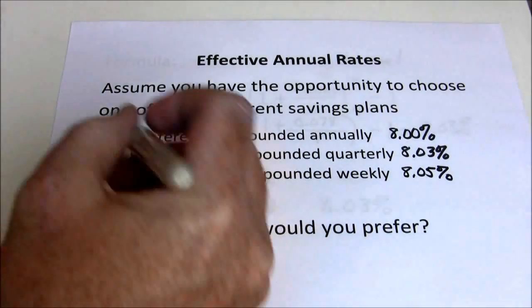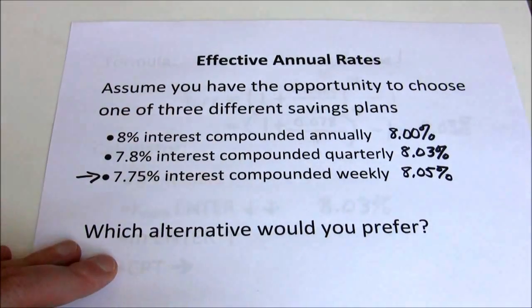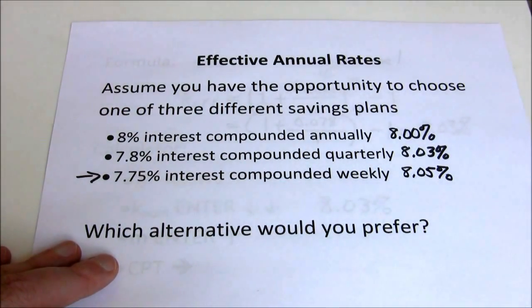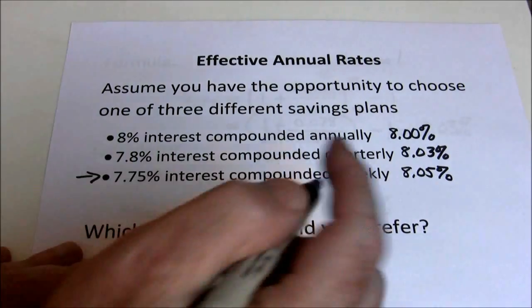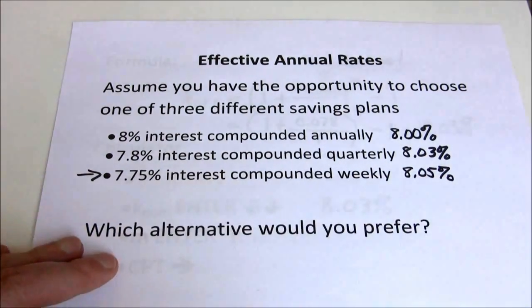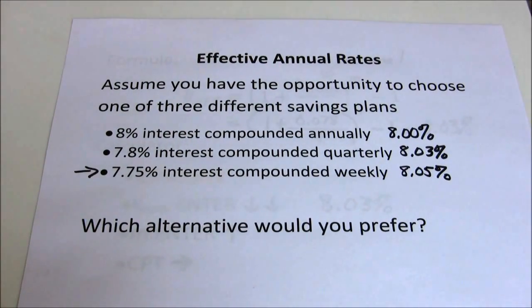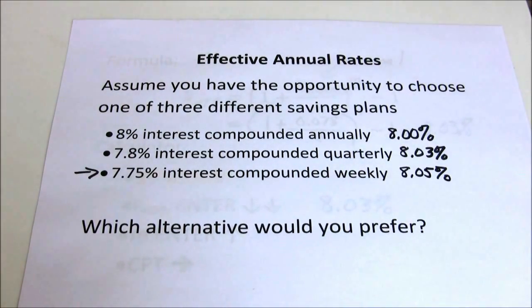And which alternative would you prefer? We prefer higher rates of return. So assuming these are all the same risk, we want to have 7.75% interest compounded weekly. That's not going to make a huge difference. These are all pretty close. But remember, some large corporations have millions of dollars or in some cases even billions of dollars in short term investments. 0.02% may not be a big difference to you or I but to a company like Microsoft or Apple that can make a significant difference in their final cash flows available.